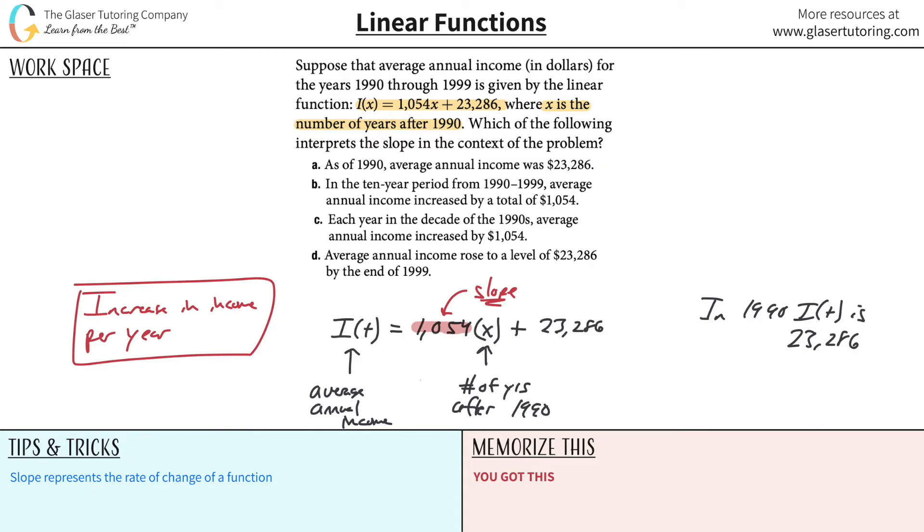In the 10-year period from 1990 to 1999, average annual income increased by a total of $1,054. Does that sound right? Did it increase by only this amount over this whole time period? No, it increases by this amount per year. So that can't be right.